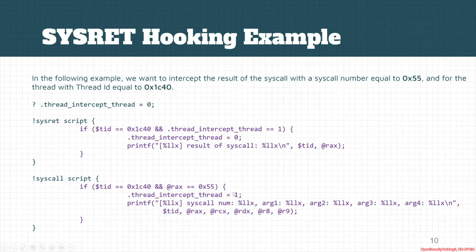If we see this special system call in this thread, we set the thread_intercept_thread variable to 1, indicating the application has executed this syscall. The next thing we expect to see from this thread is a sysret. In this example, we print the system call number along with its parameters.